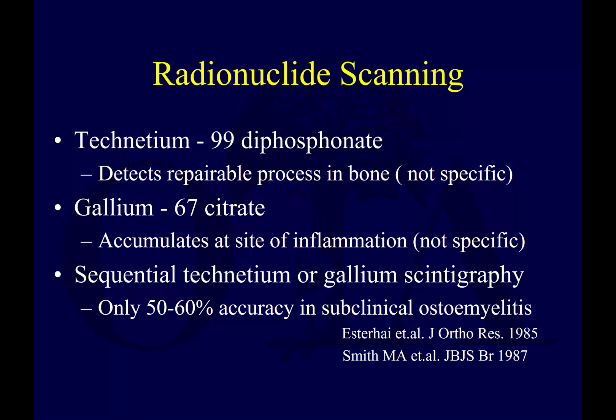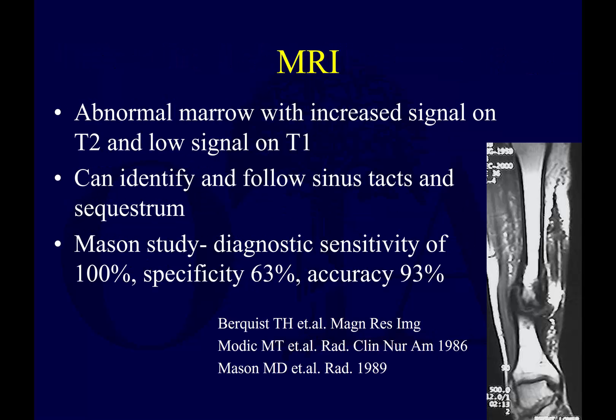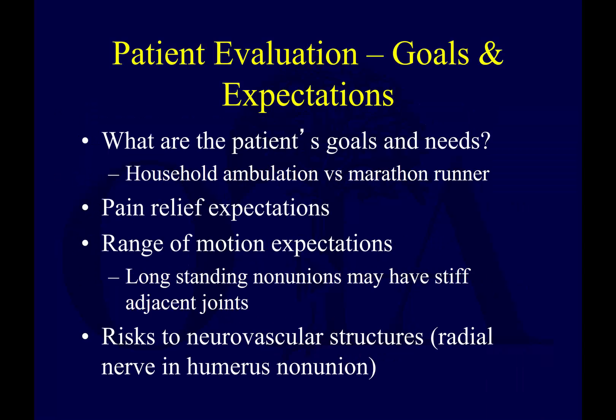Regarding nuclear scanning: technetium and gallium scanning are not that specific — they'll light up in these cases but are not the most accurate. Indium-labeled white blood cell scans are potentially helpful in infection cases; if you suspect a subclinical infection, consider getting one. MRI can help identify where a sinus tract is going, or if there's sequestration, fluid collection, or bone abscess not otherwise visible. However, with steel implants it can be difficult, and assessing vascularity on MRI is limited.